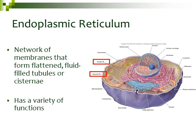Outside of our nucleus, we have a structure called the endoplasmic reticulum. The endoplasmic reticulum is often abbreviated as ER. The ER is a network of membranes that forms flattened, fluid-filled tubules. The endoplasmic reticulum has a variety of functions — there are actually two different types: the rough ER and the smooth ER.